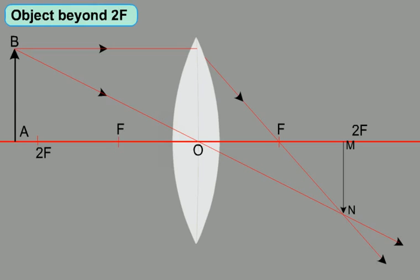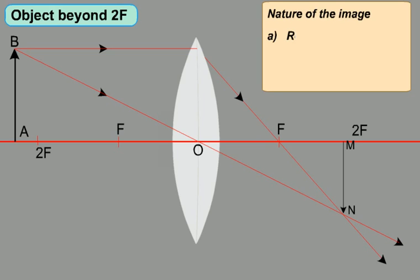Now, the object beyond 2F. When an object AB is placed beyond 2F, the image MN will be formed between F and 2F on the other side of the lens. The image will be real, inverted, and diminished.